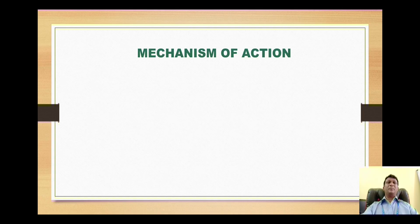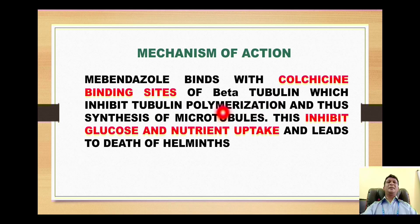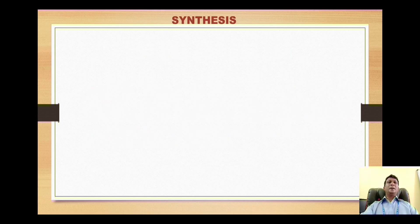Next, move on to the mechanism of action of this compound. Mebendazole binds with the colchicine binding site of beta-tubulin inside the parasite, which inhibits the tubulin polymerization and thus ultimately leads to the inhibition of the microtubule formation. The microtubules are highly important for the uptake of glucose and nutrients for the parasite, and so the glucose and nutrient uptake is inhibited, leading to the death of the helminths.